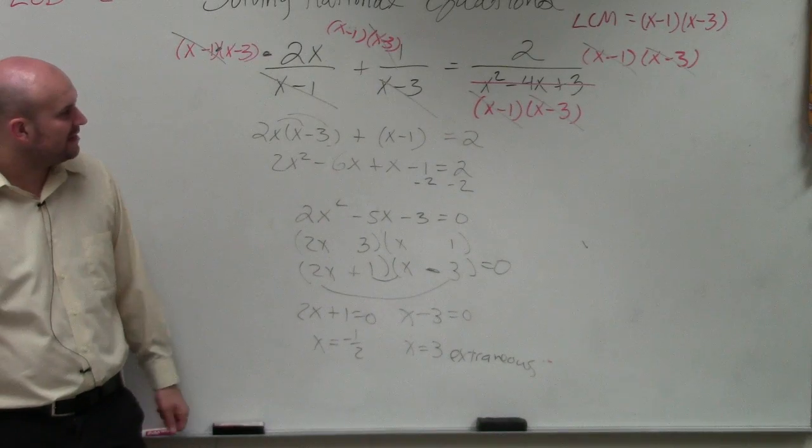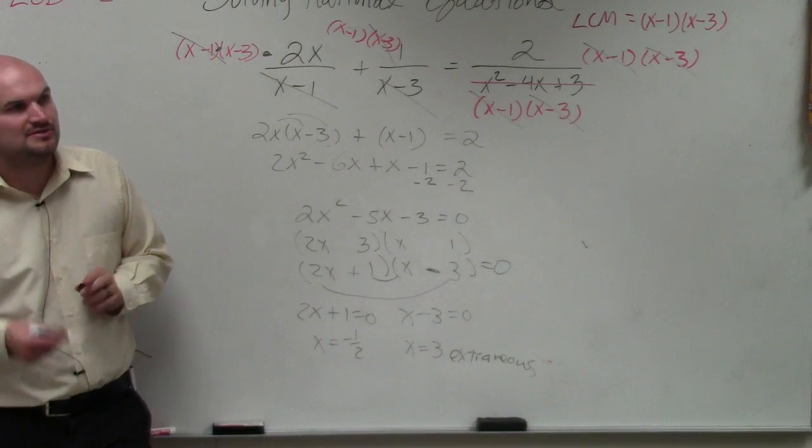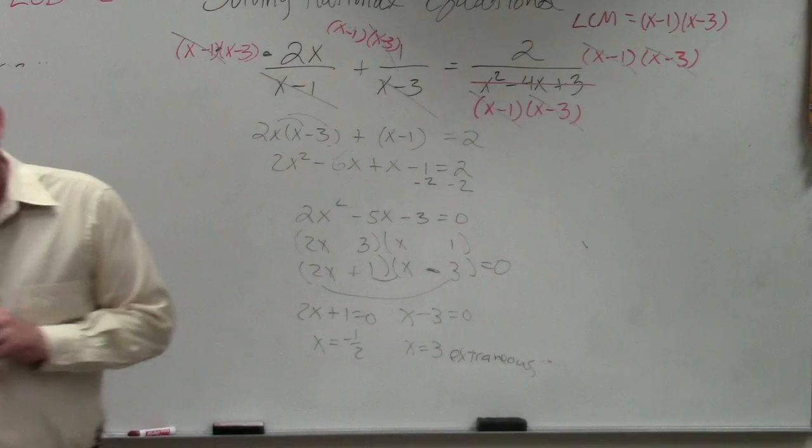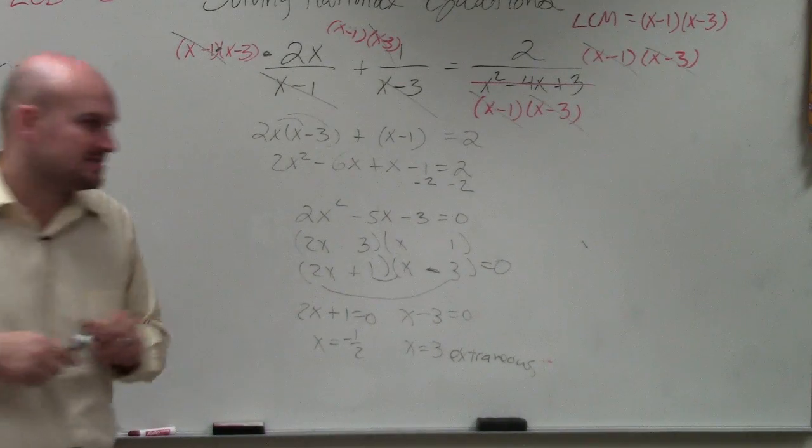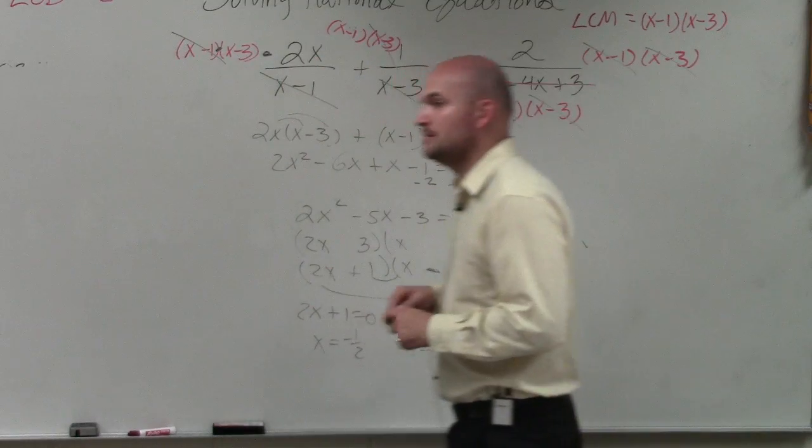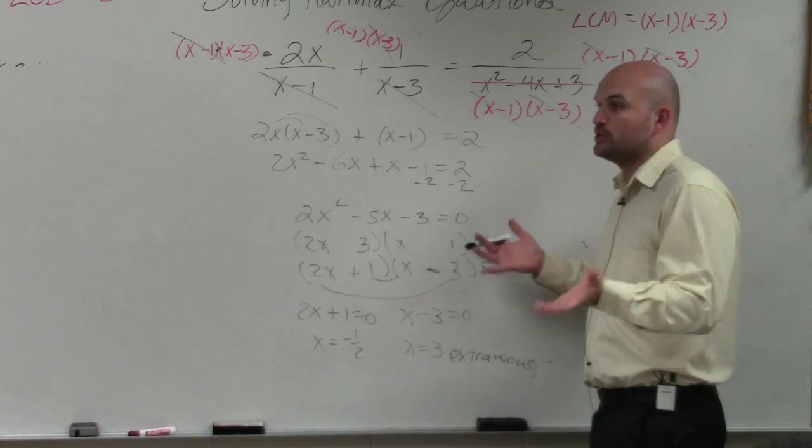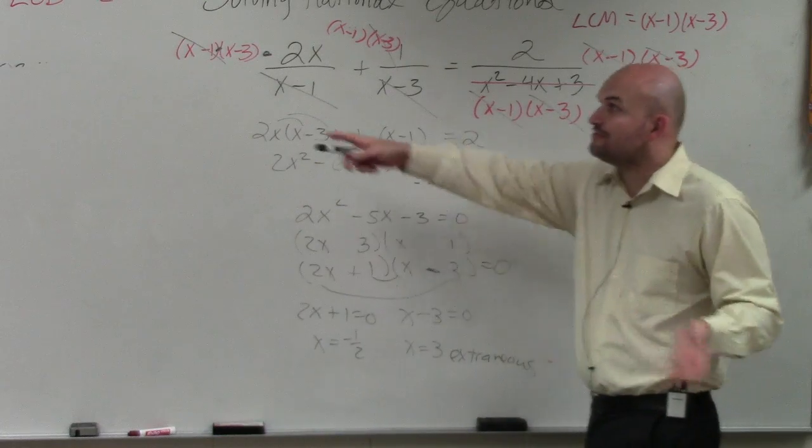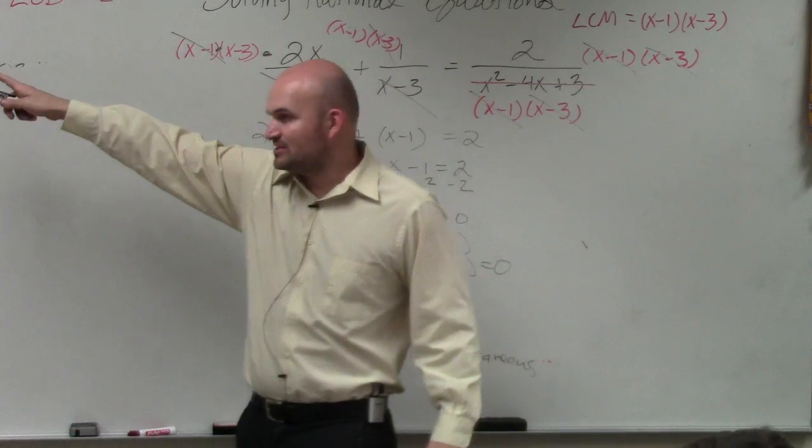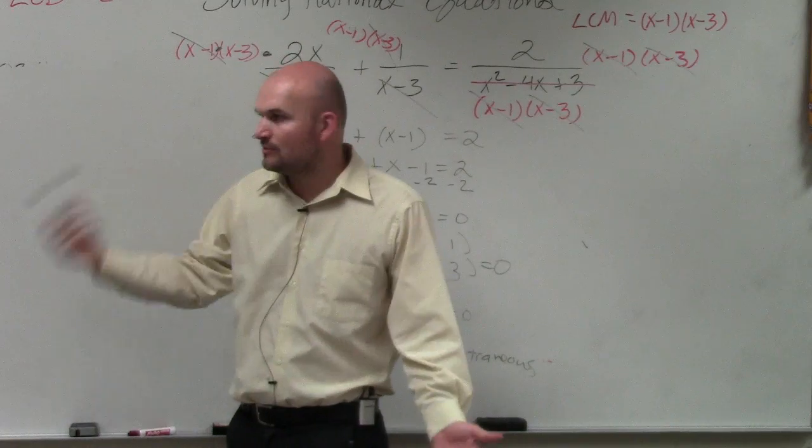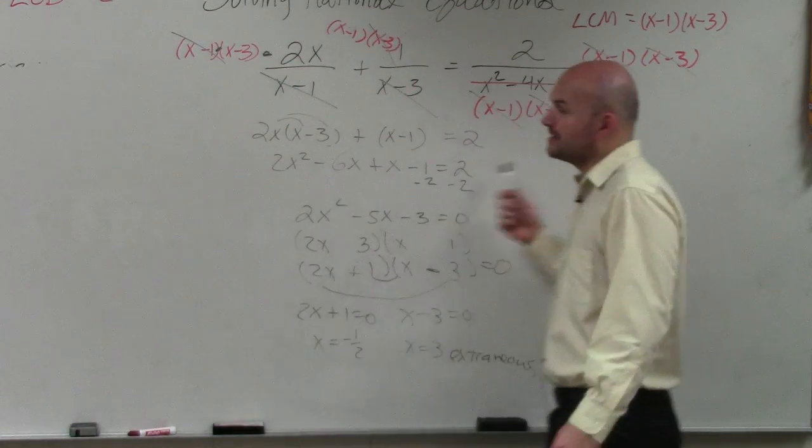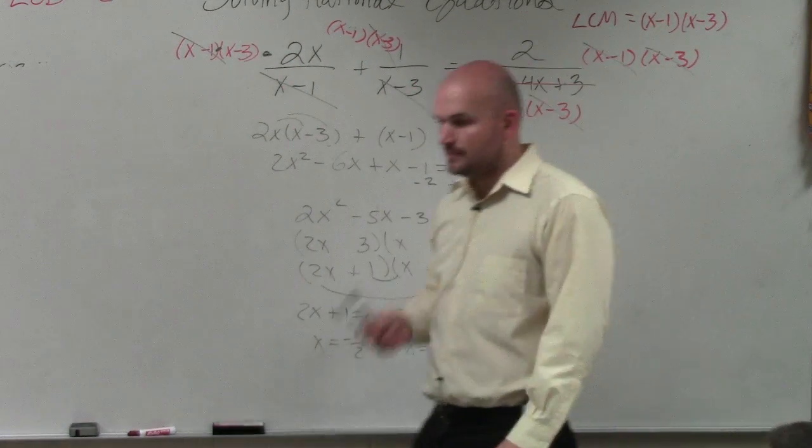So we just have negative 1 half, which does not make any of the denominators 0. OK? Why wouldn't it be a point on the graph? Because it makes the denominator 0. Right? And remember when you were graphing rational expressions? Whatever made the denominator 0 was an asymptote. Right? So therefore, if this makes the denominator 0, it's not going to be a solution to the graph. OK?